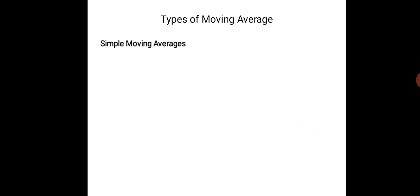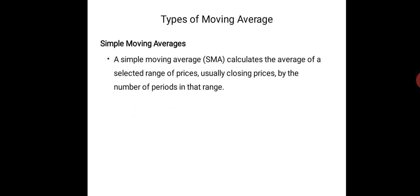Moving averages come in different types: we have simple moving average, exponential moving average, and weighted moving average. We will cover simple moving average in this video. A simple moving average calculates the average of a selected range of prices, usually closing prices.